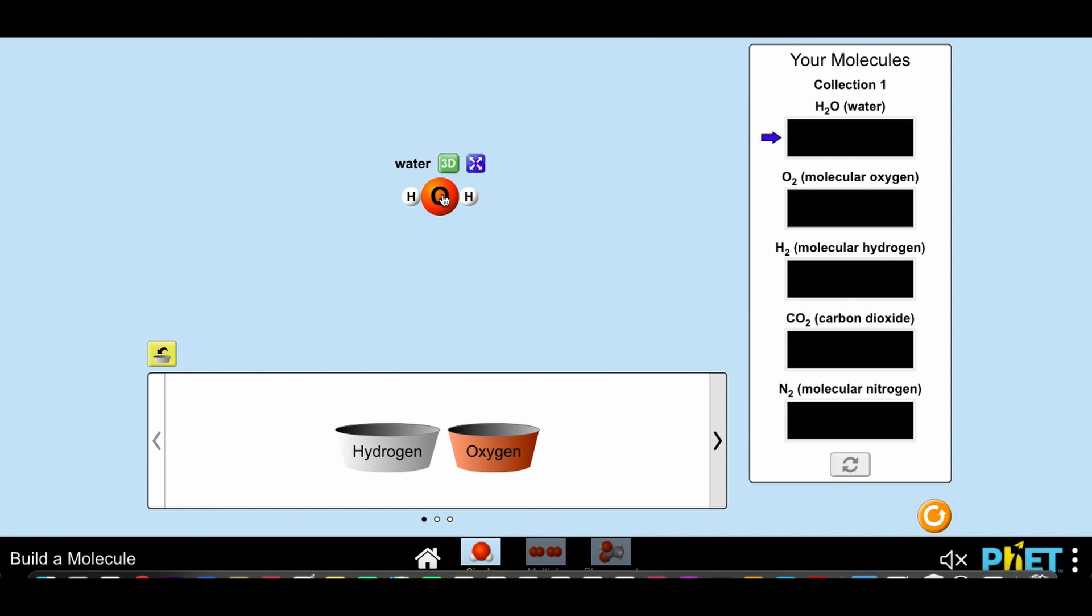You'll notice there are two single chemical bonds holding the atoms together. Next, we'll place the molecule into collection 1 and replenish our supply of atoms.